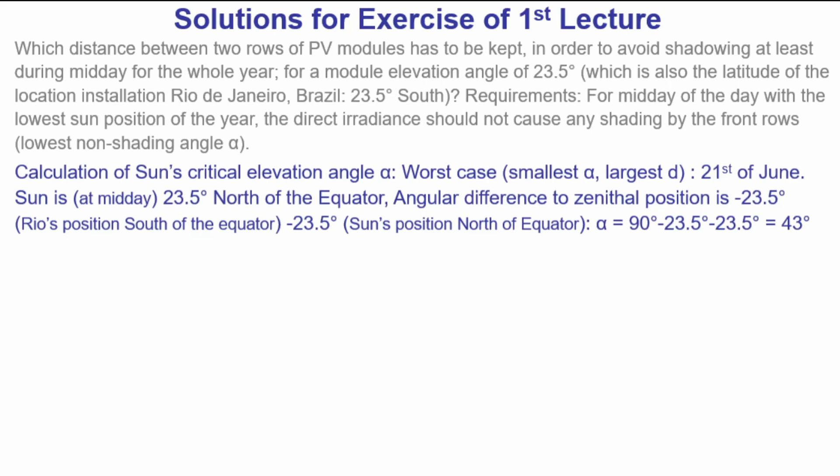Then the angular difference between the zenith position in Rio, it's minus 23.5 degrees because the Rio is located at 23.5 degrees, and additional 23.5 degrees. That's the sun position away from the equator because it's north of the equator.